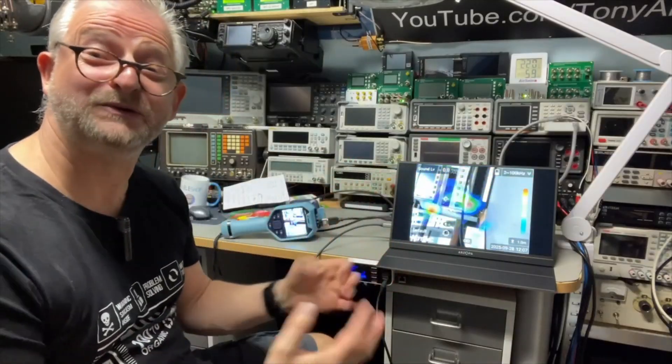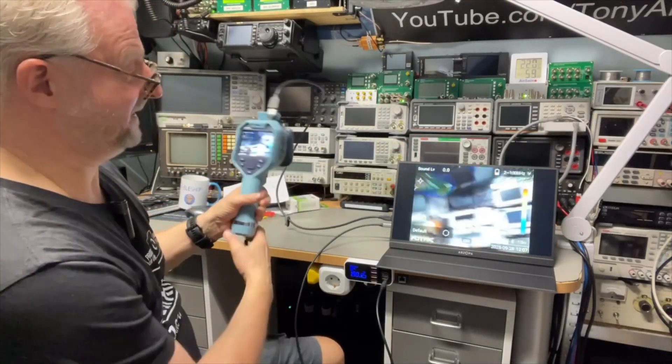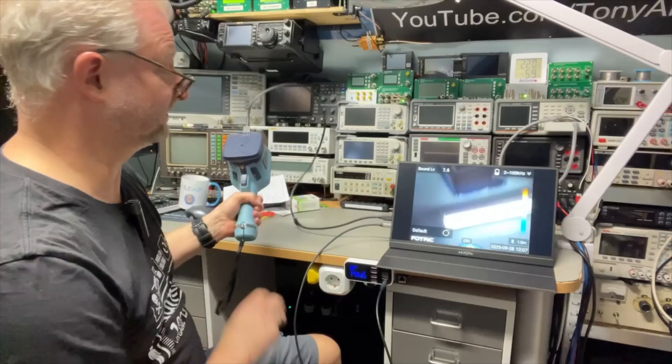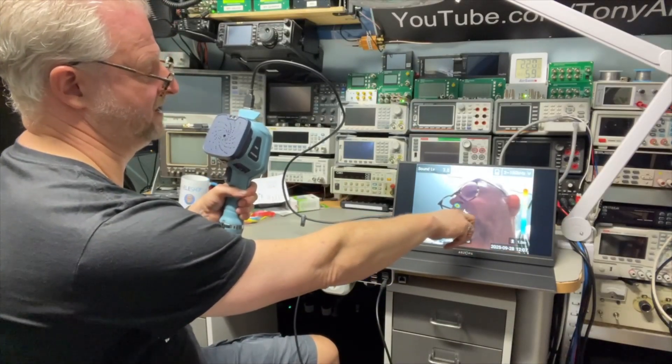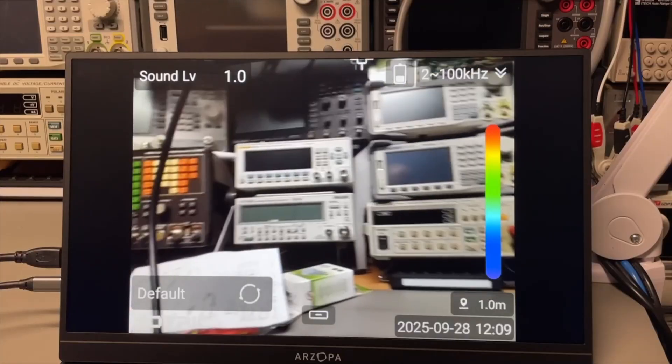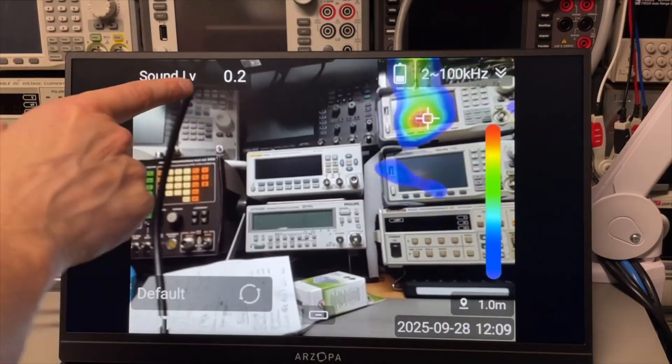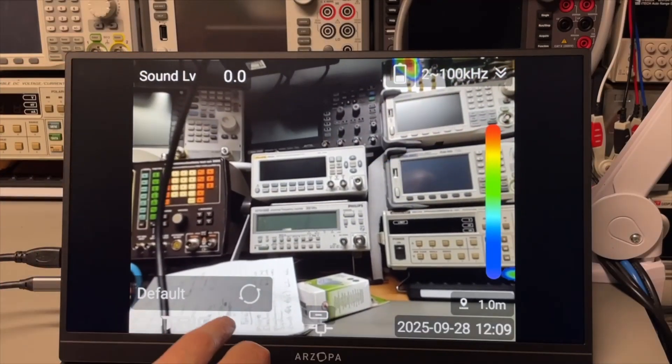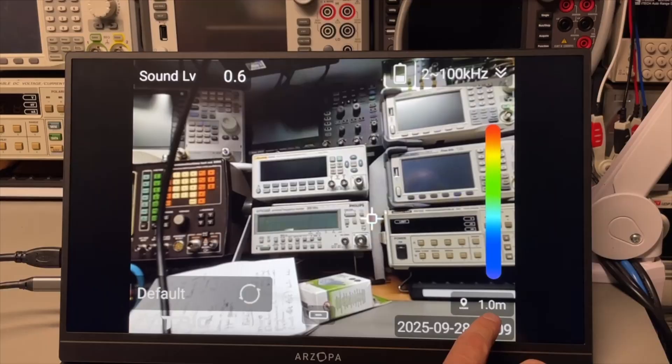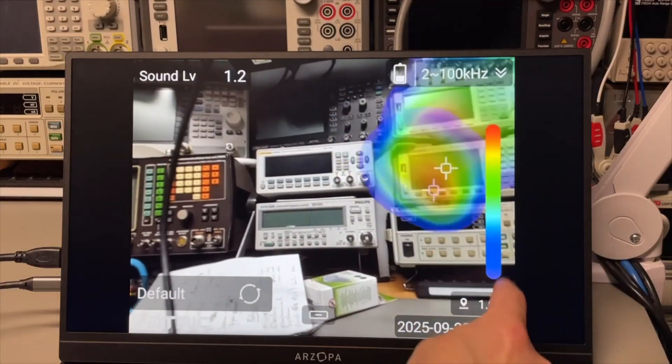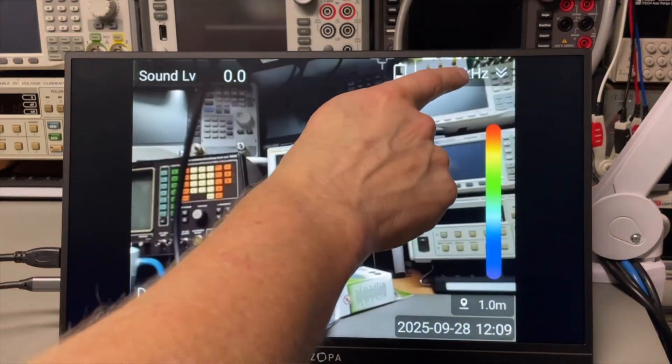It is possible to connect an HDMI screen. I connected a 15 inch one so it's much easier to see. We can see if we talk it detects the sound. So we see here the screen, this is sound level. I don't know if it's in dBs maybe. Date, time, the distance it is set to. And we have here the spectrum. I can change the spectrum, between 2 and 100k, that is the full spectrum.